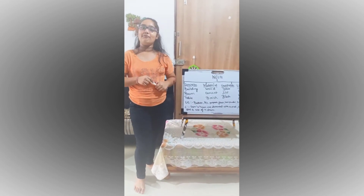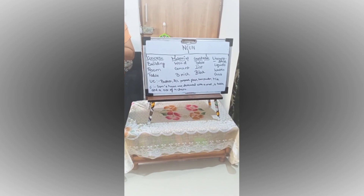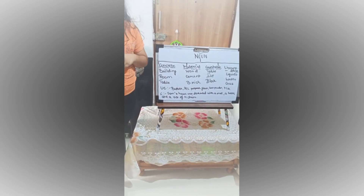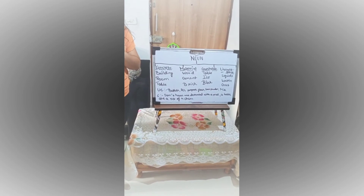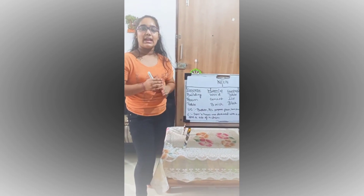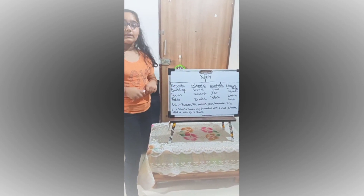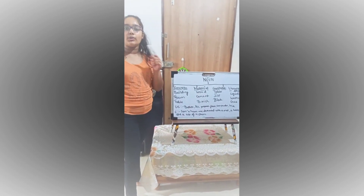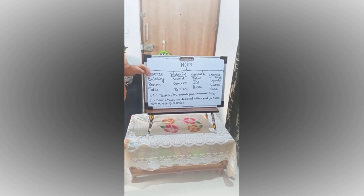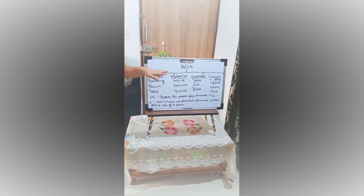Let's quickly recap what we have learned. Concrete nouns are names of things which can be seen or touched — for example, building, room, table. Material nouns are names of those things out of which things are made — for example, wood is used to make furniture, tables, chairs, and cement and brick are used for making buildings and houses. That's why they all come under material nouns.